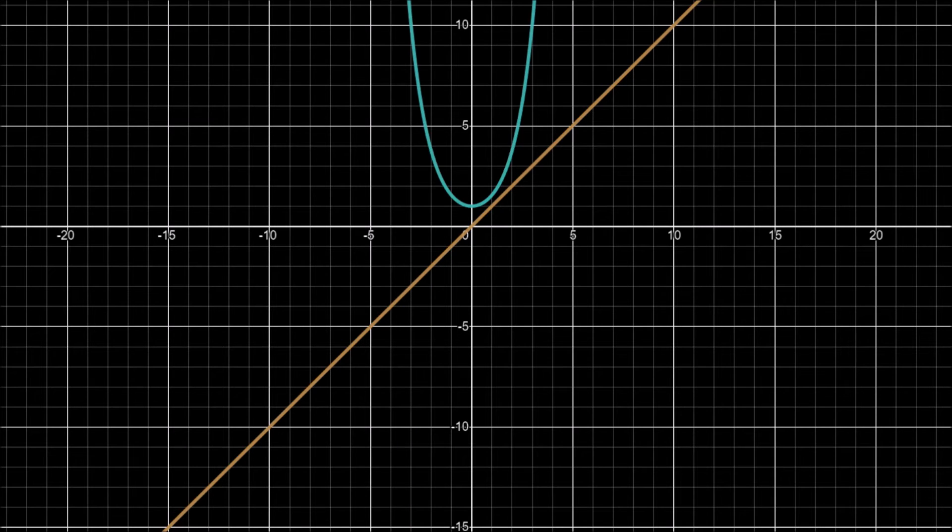We have our cosh x function in blue and we mirror it in the line y equals x, and this gives us our arc cosh x function.